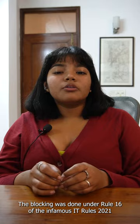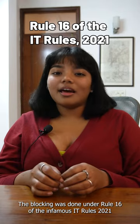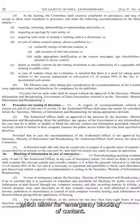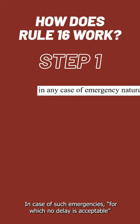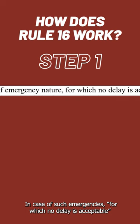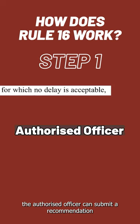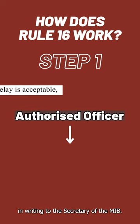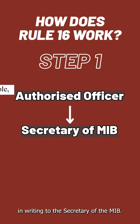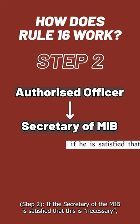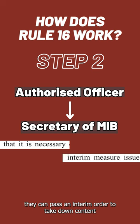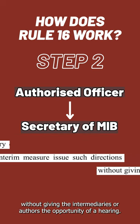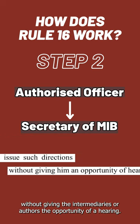The blocking was done under Rule 16 of the infamous IT Rules 2021, which allow for emergency blocking of content. How does Rule 16 work? Step 1: In case of such emergencies for which no delay is acceptable, the authorized officer can submit a recommendation in writing to the Secretary of the MIB. Step 2: If the Secretary of the MIB is satisfied that this is necessary, they can pass an interim order to take down content without giving intermediaries or authors the opportunity of a hearing.